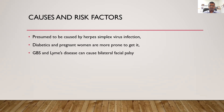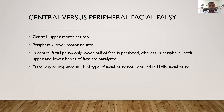Some conditions like Guillain-Barré syndrome and Lyme disease can cause facial paralysis on both sides. There are two types of facial paralysis: one is called central where the disease is in the brain, and the second is peripheral where the nerve supplying the face gets affected.